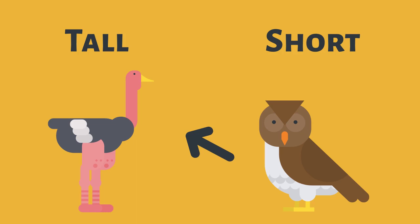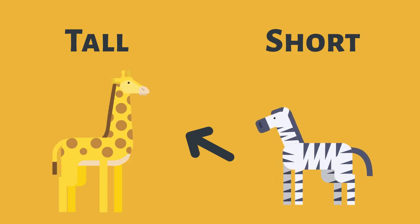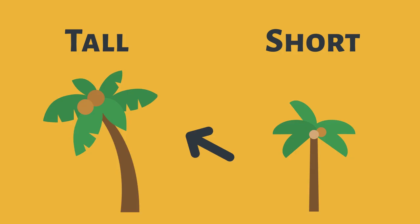The ostrich is a tall bird, while the owl is a short bird. The giraffe is a tall animal, while the zebra is a short animal. This tree is tall, while this tree is short.